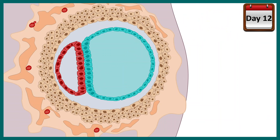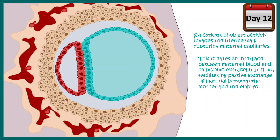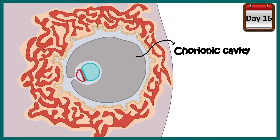At day 12, further development happens. The lacunar network becomes more prominent and invades the maternal sinusoids, rupturing them and leading to a blood connection between the embryo and the mother — this is the first time maternal blood connects with the embryo. Inside the cytotrophoblast and outside the hypoblast, extraembryonic mesoderm forms. Slits appear in this mesoderm, ultimately forming the chorionic cavity. A portion of extraembryonic mesoderm holds the inner part of the embryo — this is known as the primitive stalk, which is the future umbilical cord.